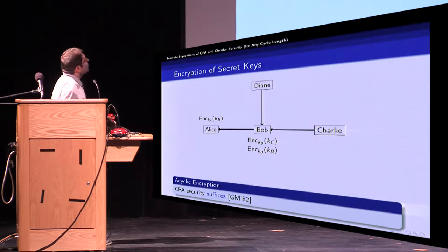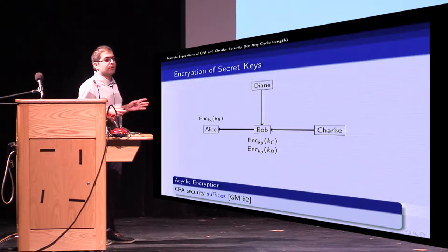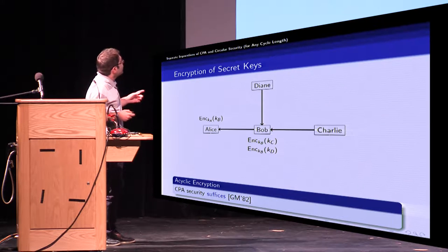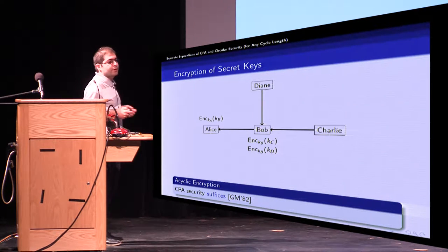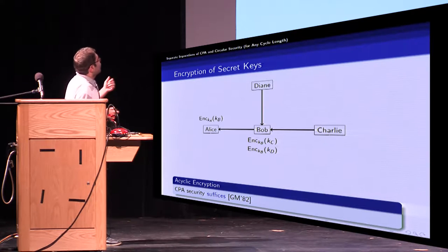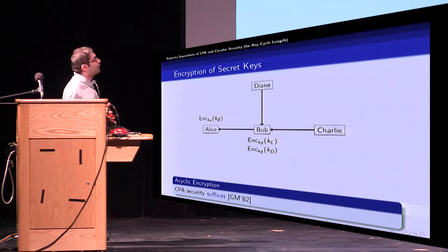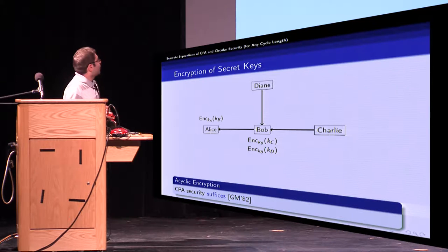So let's consider a situation in which we have encryption of secret keys. In this figure each directed edge shows that tail's secret key is encrypted under head's public key. For example, an edge from Bob to Alice shows that Bob's secret key is encrypted under Alice's public key.